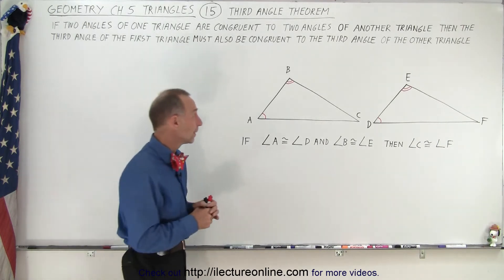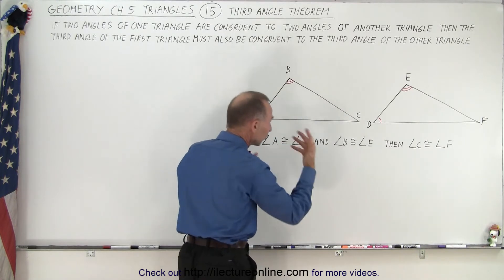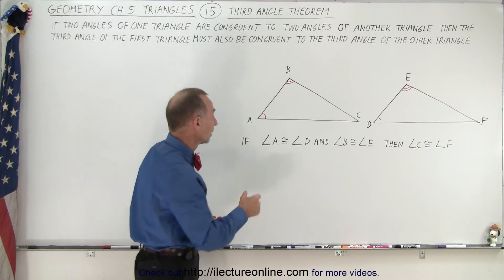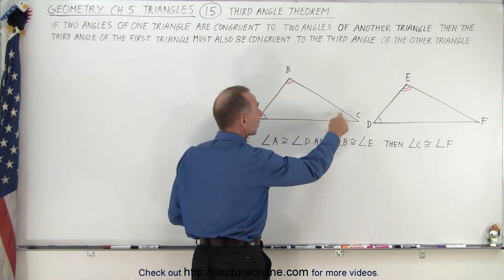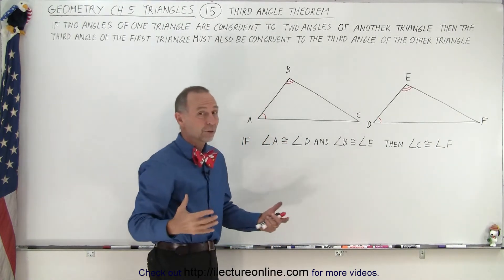because when you think about it, let's say you know the measure of angle A and the measure of angle B. Let's say they add up to some value, a hundred degrees together. Well that means the third angle must be 180 degrees minus the sum of the measures of these two angles. And of course that's